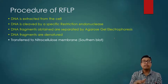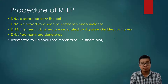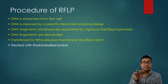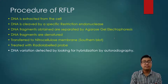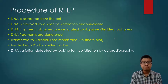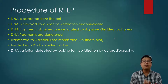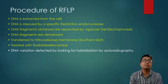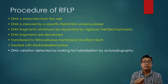Just like Southern blotting, the denatured fragments are transferred to a nitrocellulose membrane, followed by labeling with a radiolabeled probe. Ultimately, the DNA variation is detected by hybridization and autoradiography. The procedure is the same as Southern blotting, but here we are looking at various different fragments — because if the restriction enzyme acts differently, different fragments will be produced.